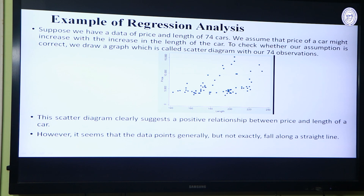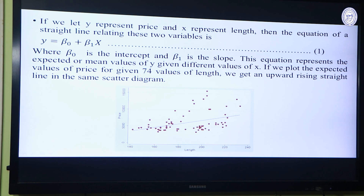The first impression from this scatter diagram is that it is loosely upward rising — that means as the length of the car increases, price of the car also increases — but it is not an exact positive relationship. It suggests there might be a positive relationship between price and length of the car, but all the points do not fall on the same straight line. If we construct a regression equation y equal to beta 0 plus beta 1 x, here y represents price and x represents length, then beta 0 is the intercept of the line and beta 1 is the slope of the line.